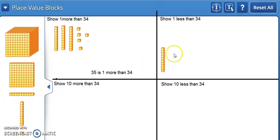To show one less than 34, we build our number: 10, 20, 30, 31, 32, 33, 34. To show one less, we take away 1. Then we count.